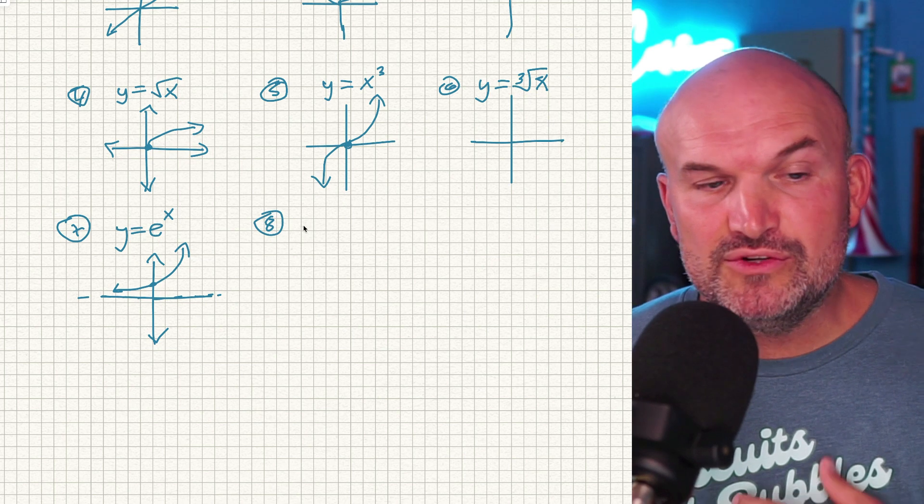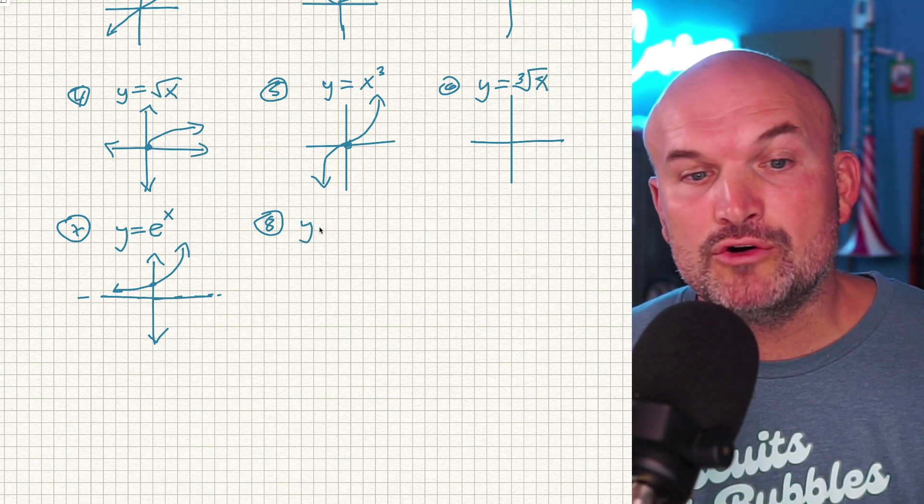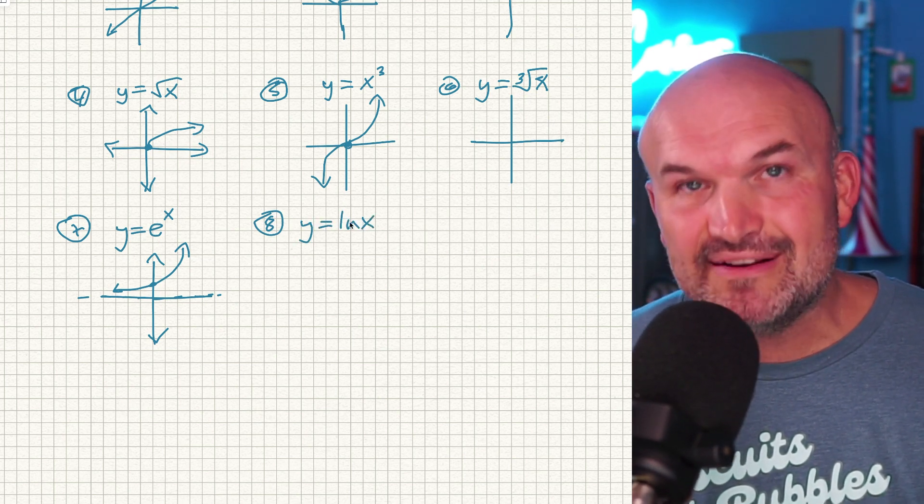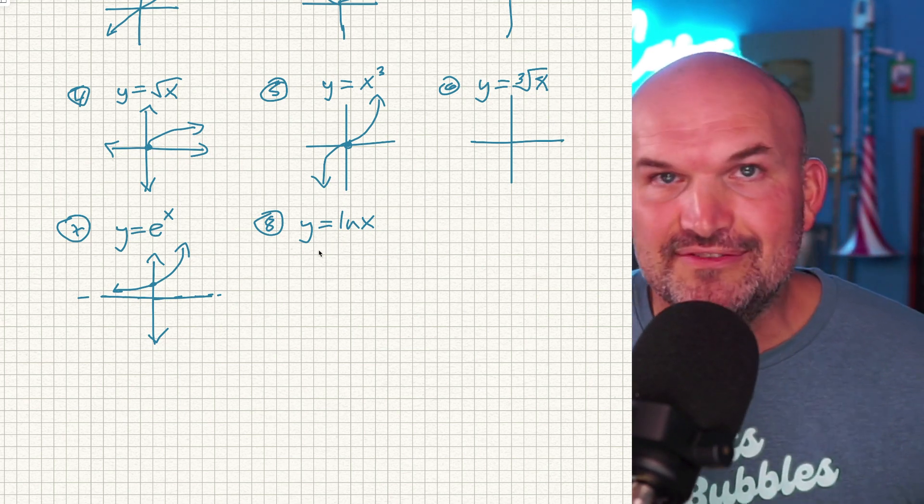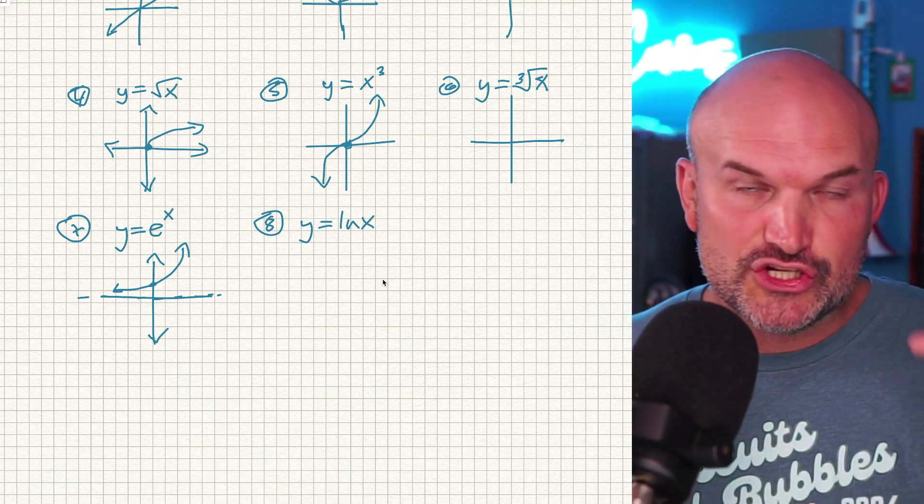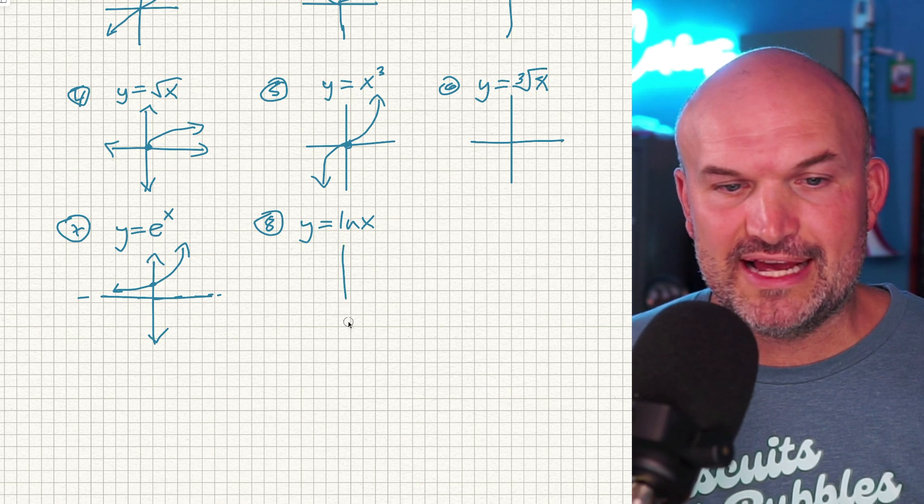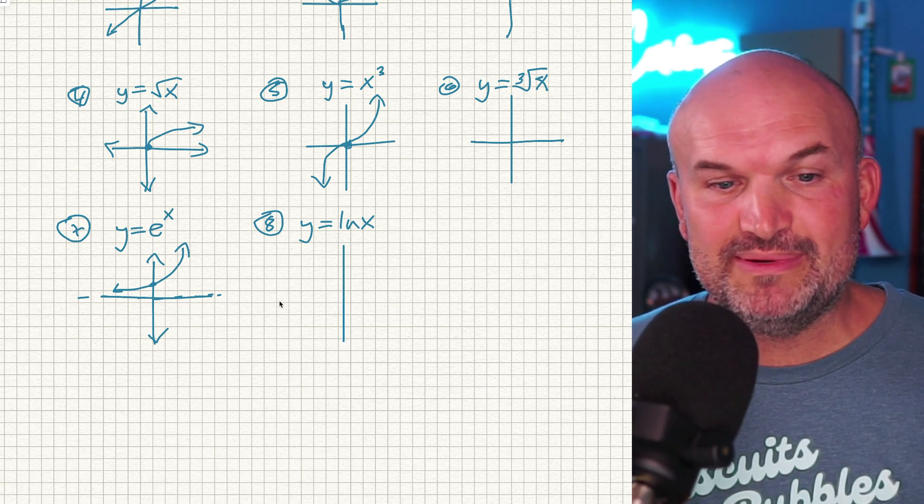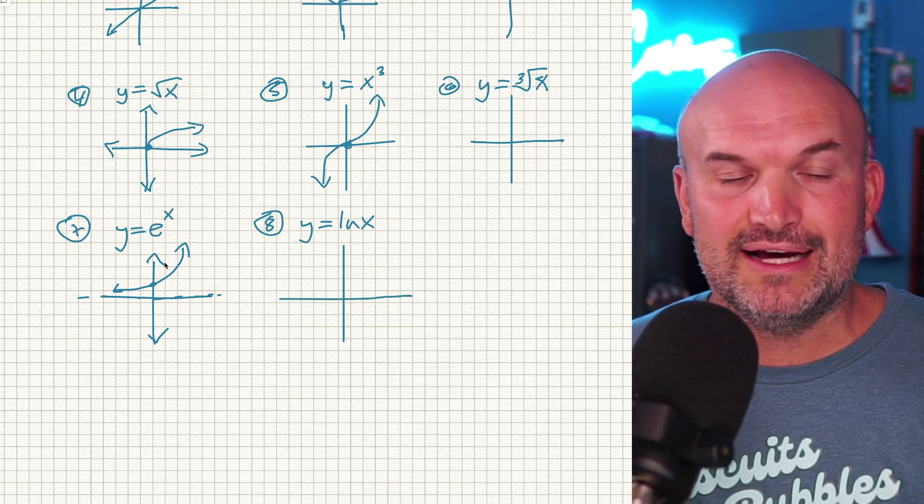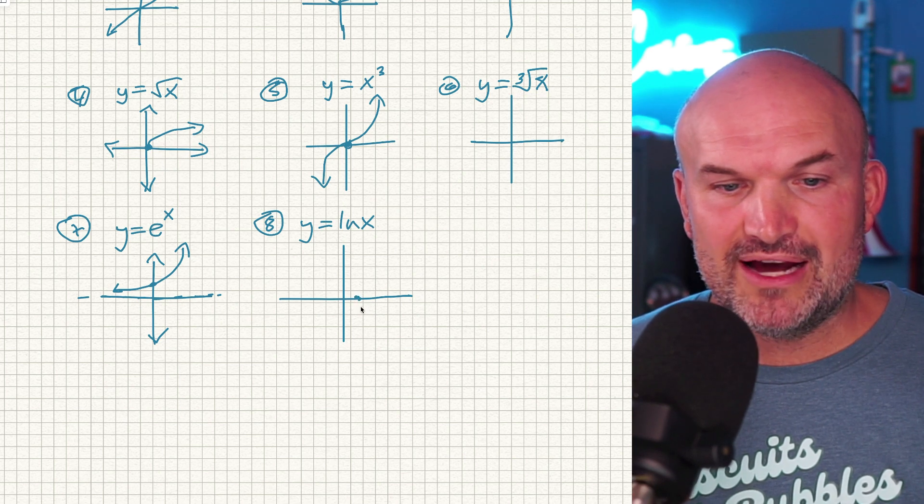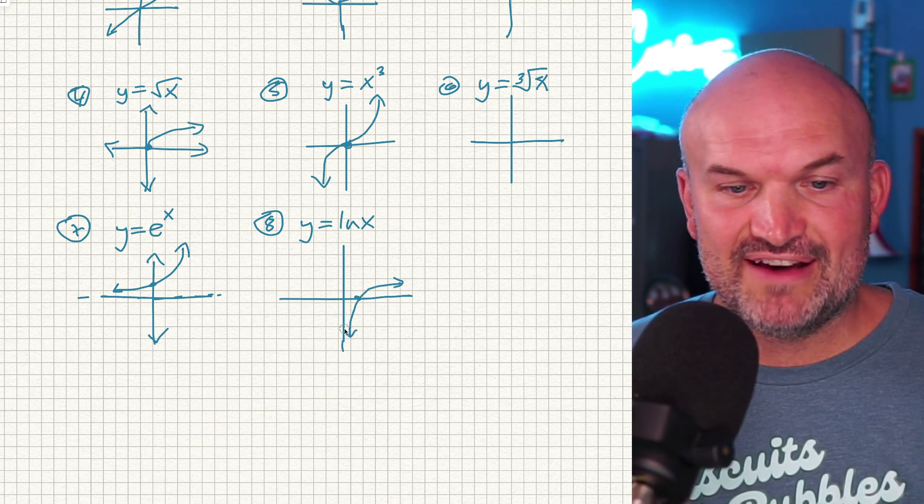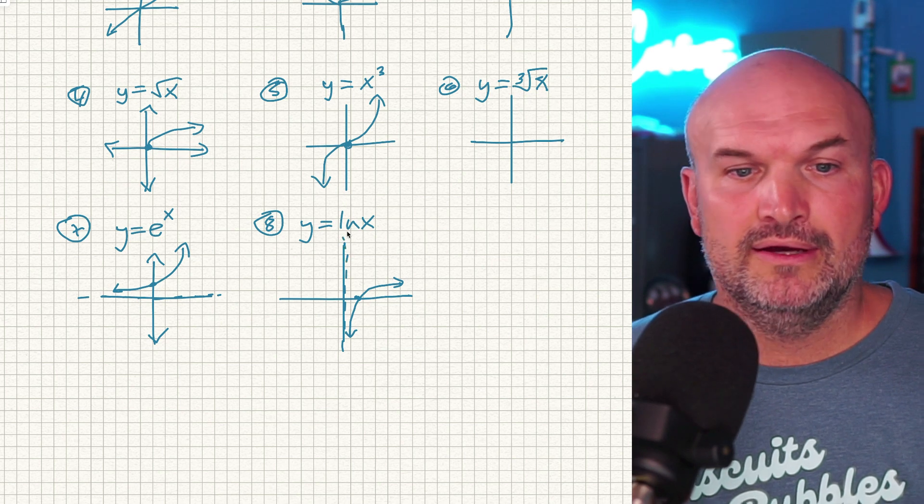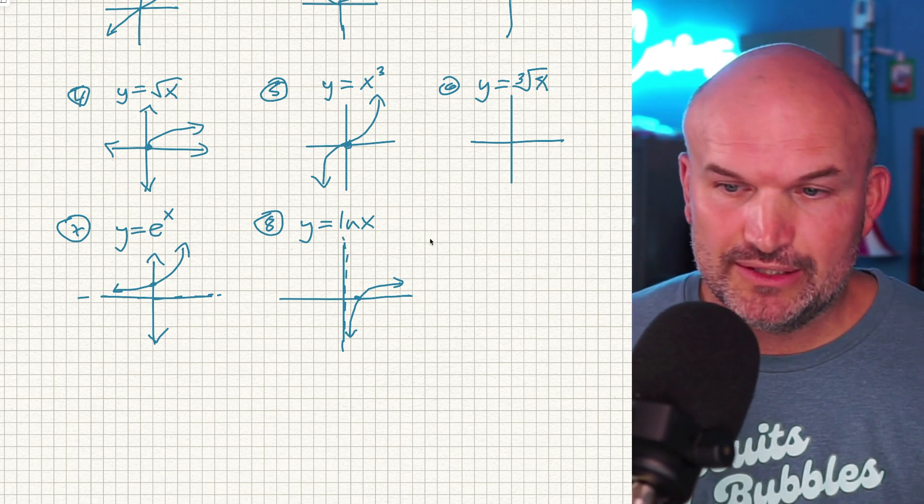But students confuse the exponential graph with the logarithmic graph. We could use ln of x. We could use log of x. It doesn't matter if the base is e, 5, 10, anything. The general shape of the graph is going to remain the same. And guess what? This is also going to be the inverse of our exponential graph. So the logarithmic graph is going to look something like this. And this one is going to have a vertical asymptote at x is going to equal to zero.